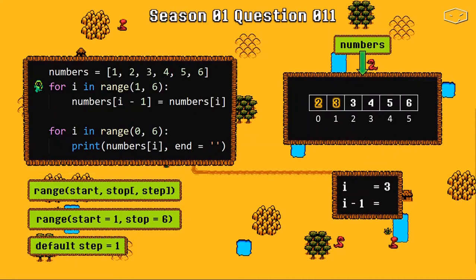A new cycle. i became 3, i minus 1 became 2. Python goes to the index 3 of our list, copies the value, and pastes into the previous position.